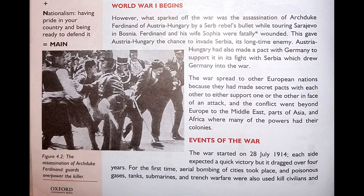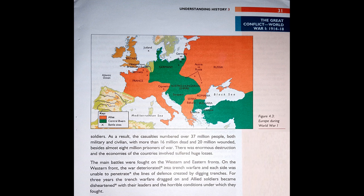A pact means a formal agreement between individuals or parties. The conflict went beyond Europe to the Middle East, parts of Asia and Africa, where many of the powers had their colonies. Events of the War: The war started on 28 July 1914. Each side expected a quick victory but it dragged on over four years. For the first time, aerial bombing of cities took place, and poisonous gases, tanks, submarines and trench warfare were also used, killing civilians and soldiers.